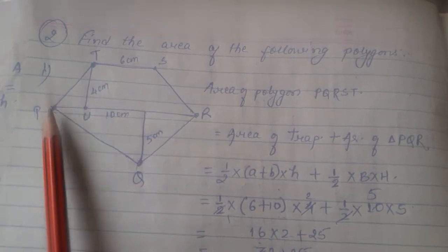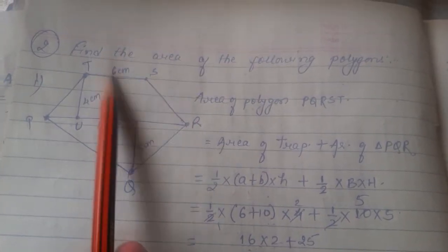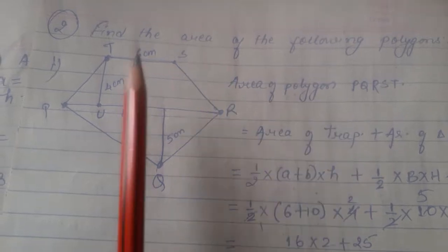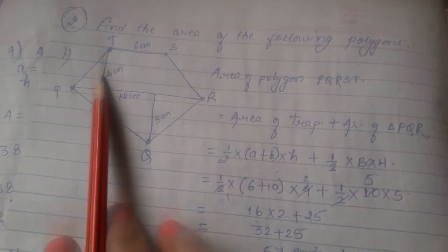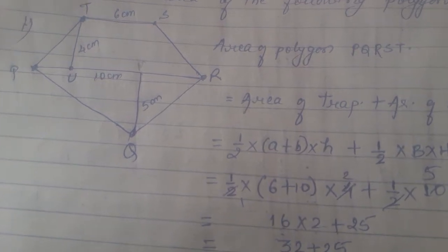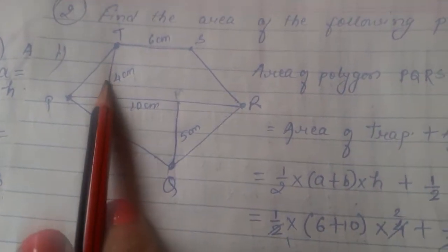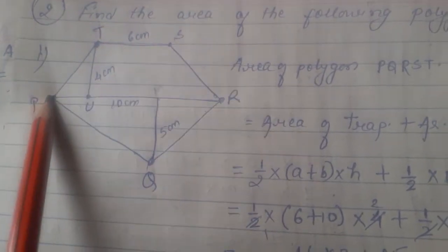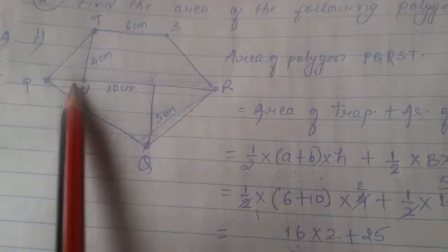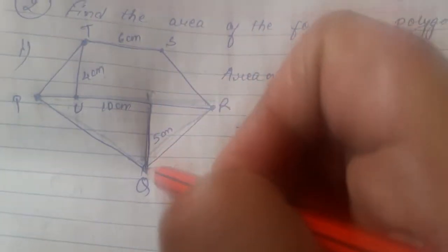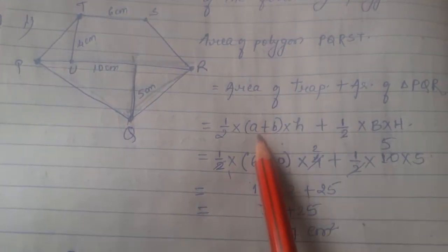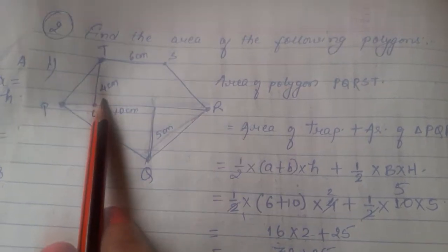Find the area of the following polygons. We have a pentagon given here. The diagonal is PR, and we have two heights — let's call the points TU and M — which are perpendicular heights on this diagonal. We then have a trapezium and a triangle. For the triangle, the base and height give us area as half into base into height, with height 5 cm. For the trapezium, half into (A plus B) into H, where A is 6, B is 10, and H is 4.